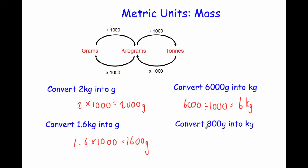And finally, convert 800 grams into kilograms. We divide by 1,000, which means we move the digits three places to the right. So we go from 800 to 80, to 8, to 0.8. So the answer is 0.8 kilograms.